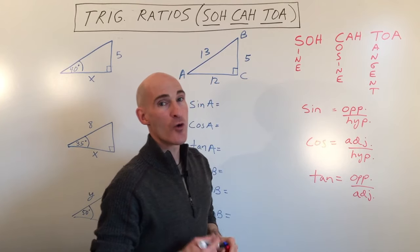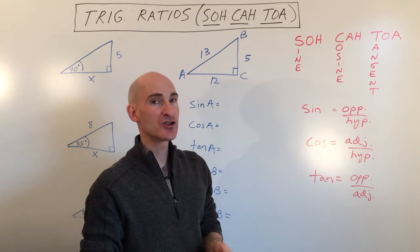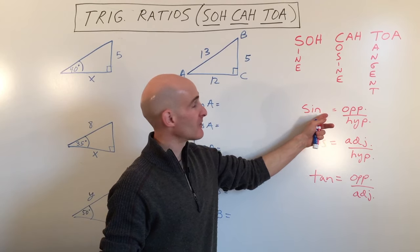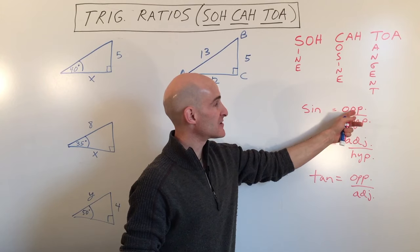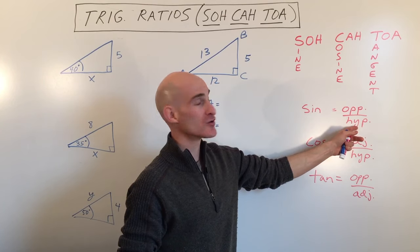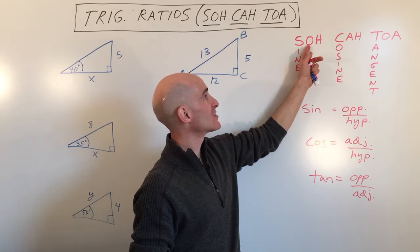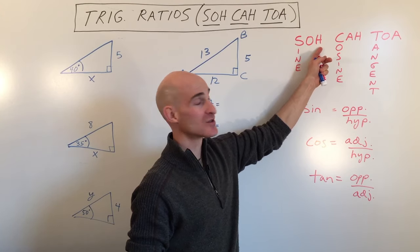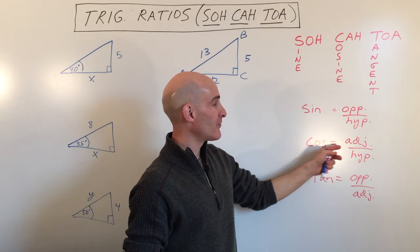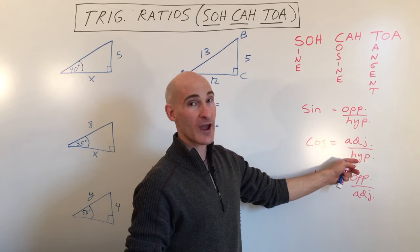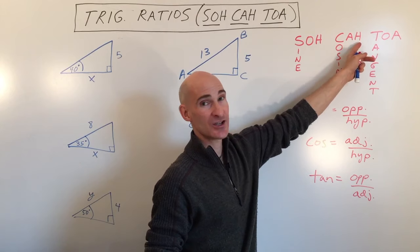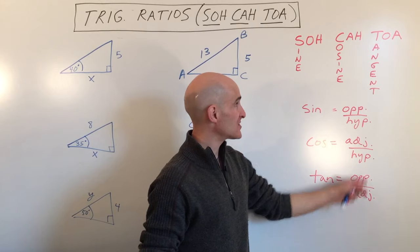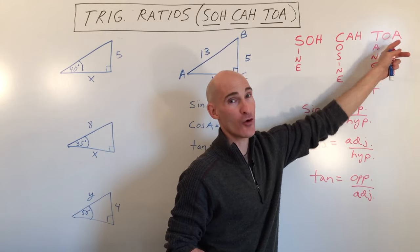Sine is a ratio — a ratio is where you're comparing two things as a fraction. The sine of an angle equals the opposite side over the hypotenuse. The cosine of an angle is the adjacent side over the hypotenuse. And the tangent of an angle equals the opposite side over the adjacent side.